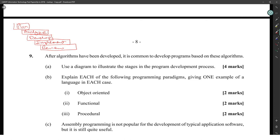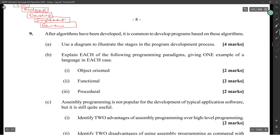Explain each of the following program paradigms, giving one example of a programming language in each case. Object-oriented is based on classes and objects, example: C++. Functional is based on breaking large programs into modules, example: C. Procedural is based on step-by-step instructions, example: Pascal.